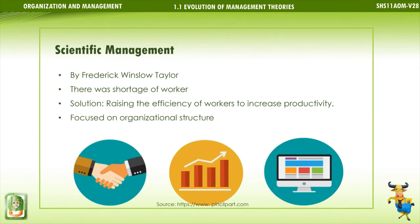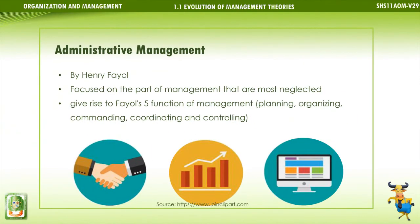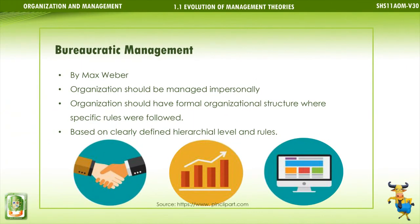Scientific Management, developed by Frederick Winslow Taylor, arose from a shortage of workers. The solution was raising the efficiency of workers to increase productivity, focused on organizational structure. Administrative Management, by Henry Fayol, focused on the parts of management most neglected, giving rise to Fayol's five functions of management: planning, organizing, commanding, coordinating, and controlling. Bureaucratic Management, by Max Weber, held that organizations should be managed impersonally and have a formal organizational structure where specific rules are followed, based on clearly defined hierarchical levels and rules.